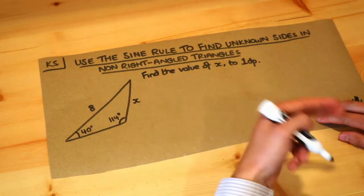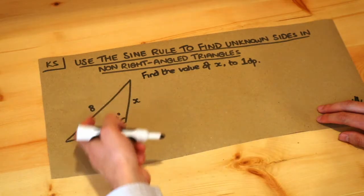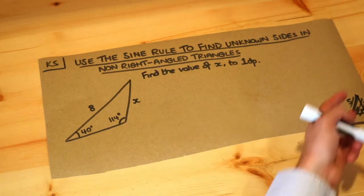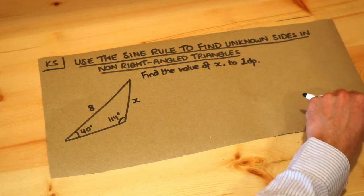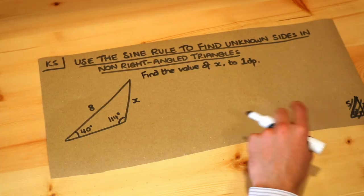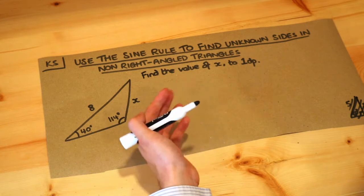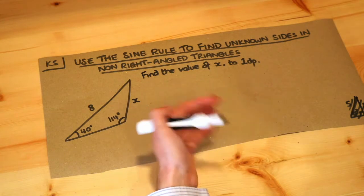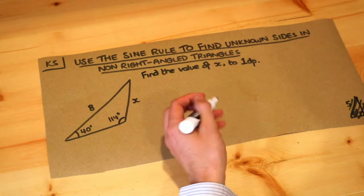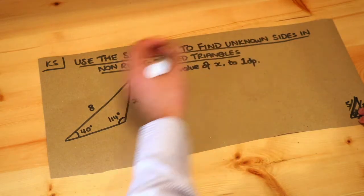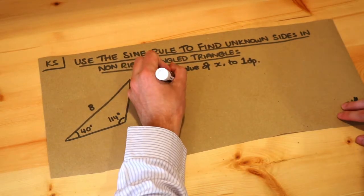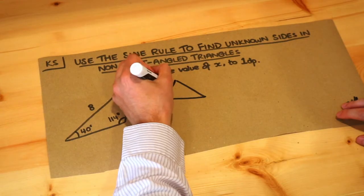Just before I introduce the formula, I need to tell you how we label the sides of this triangle. For right-angled triangles we'd have a hypotenuse, opposite, and adjacent, but it's not so clear what the hypotenuse is here. We only have a hypotenuse when we have a right-angled triangle. So this is how we label the sides.